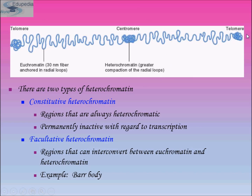This is a telomere, and heterochromatin forms the centromere because of the greater compaction. Euchromatin forms the chromatin structure of the chromosome arms, and these regions at the ends are the telomeres.